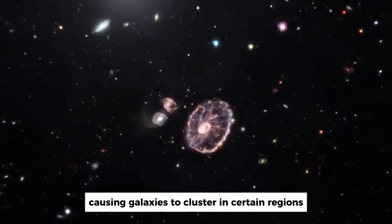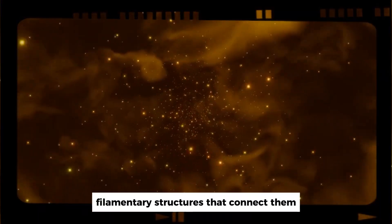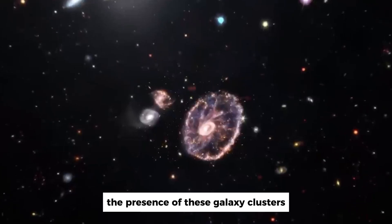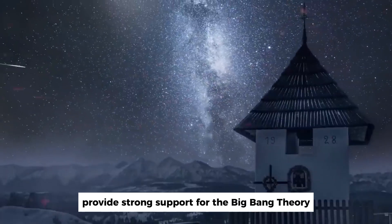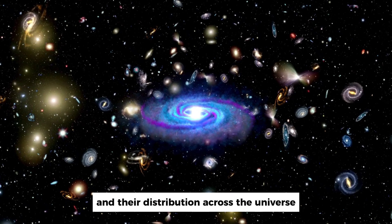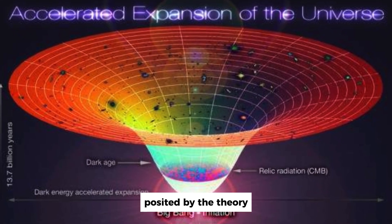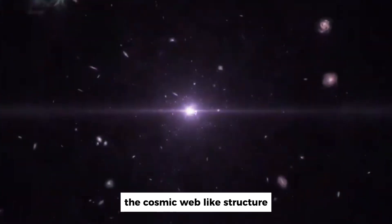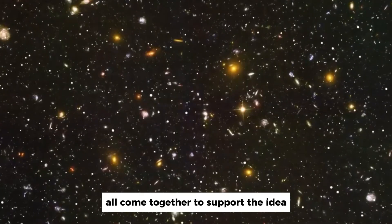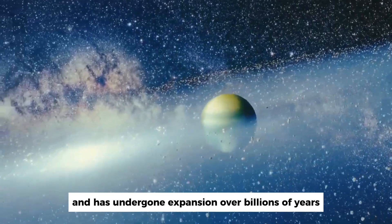Gravity draws matter together, causing galaxies to cluster in certain regions and form intricate filamentary structures that connect them. These structures reveal the cosmic web-like pattern of the universe. The presence of these galaxy clusters and the interconnected web of matter provides strong support for the Big Bang theory. The formation of galaxies and their distribution across the universe aligns with the gravitational effects expected from the initial dense and expanding state posited by the theory.